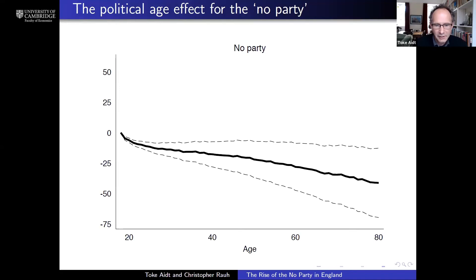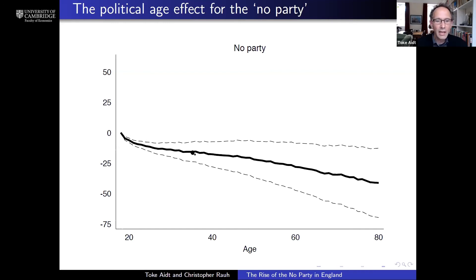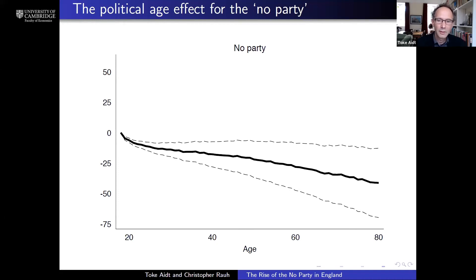This is the age effect. On the x-axis we have age, from 20 to 80. Support for the no party is normalized to zero at age 20. We can see that as individuals age, their support for the no party goes down — they start identifying to a greater extent with one of the main political parties. Combining this with the fact that society has been aging over this period, this clearly cuts the wrong way: it cannot explain the rise of the no party; on the contrary, it has slowed it down.